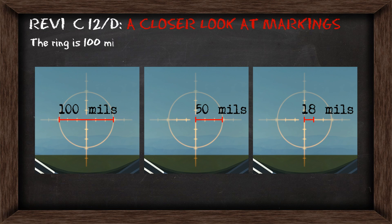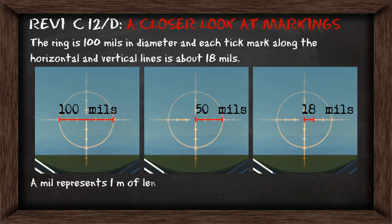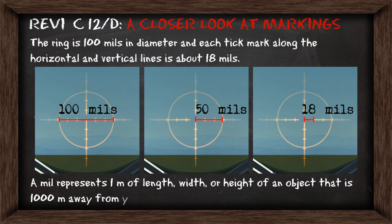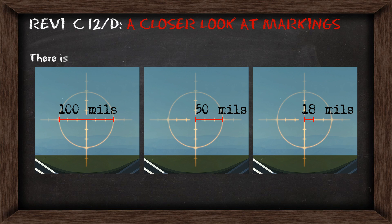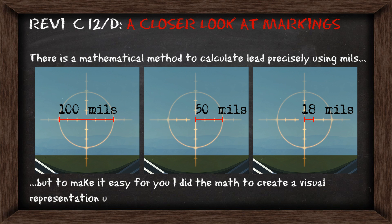Looking at the REVI in more detail, the ring is 100m in diameter and each tick mark along the vertical and horizontal lines is 18m. A MIL represents 1m of length, width, or height of an object that is 1000m away from you. This can also equal feet in imperial units. There is a mathematical method to calculate lead precisely using MILs, but to make it easier, I've done the math to create visual representations using angle-off in two main scenarios.